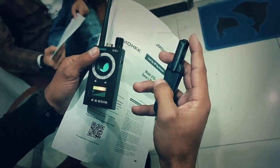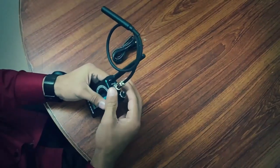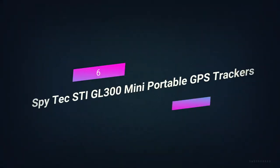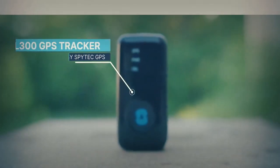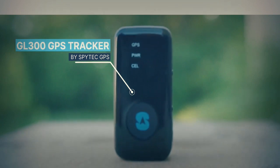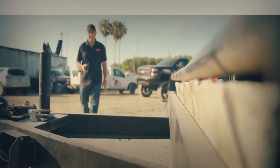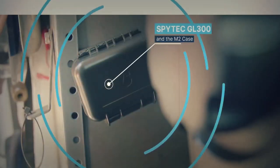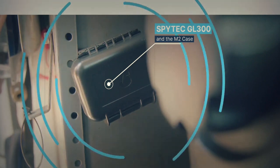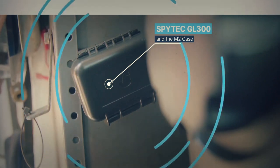Number 6, SPYTEK STI GL300 Mini Portable GPS Tracker. When you don't want to make any mistakes, you can set up car tracking. With SPYTEK STI GL300 Small Portable GPS Trackers, you'll be able to do this job quickly and accurately.